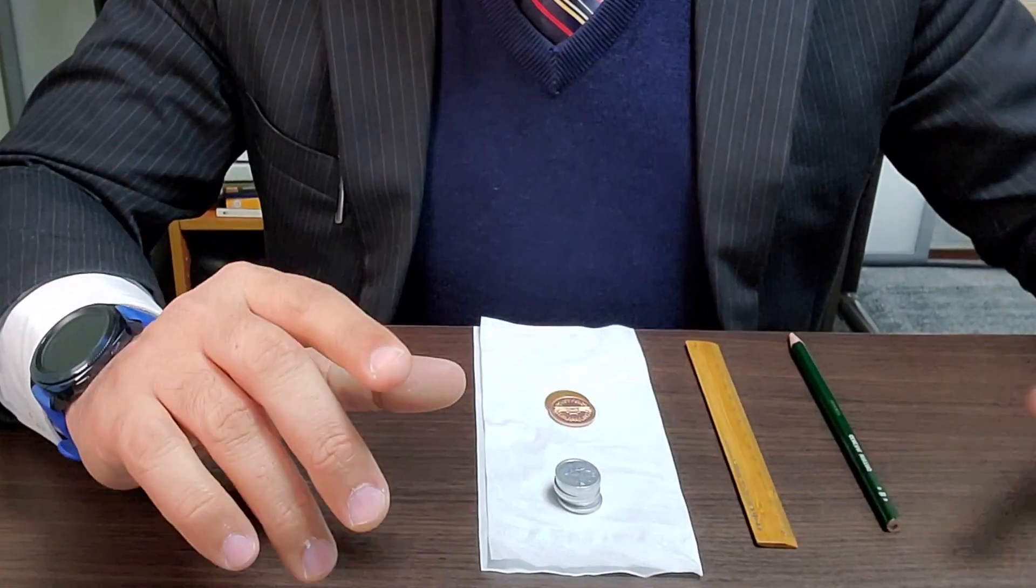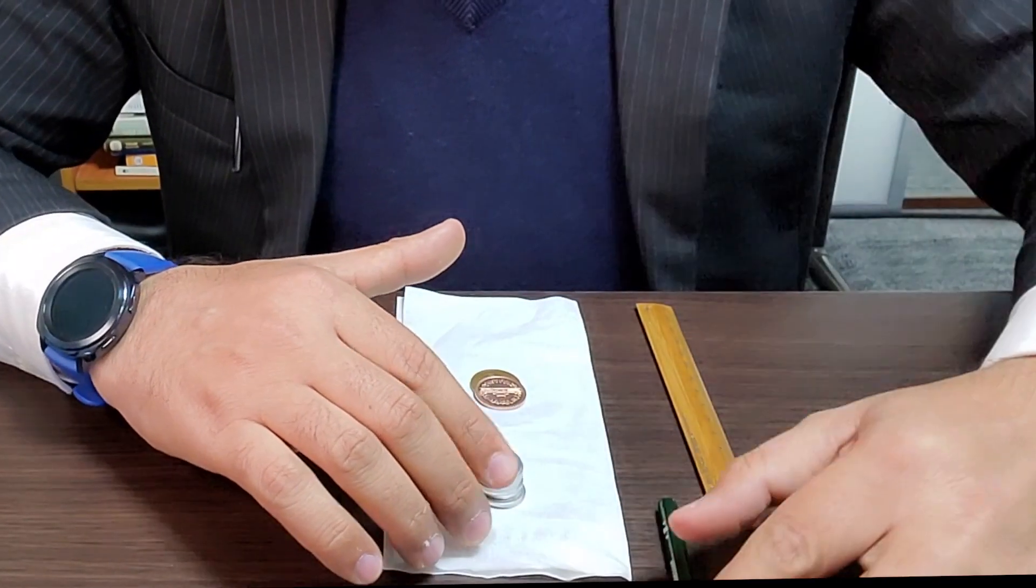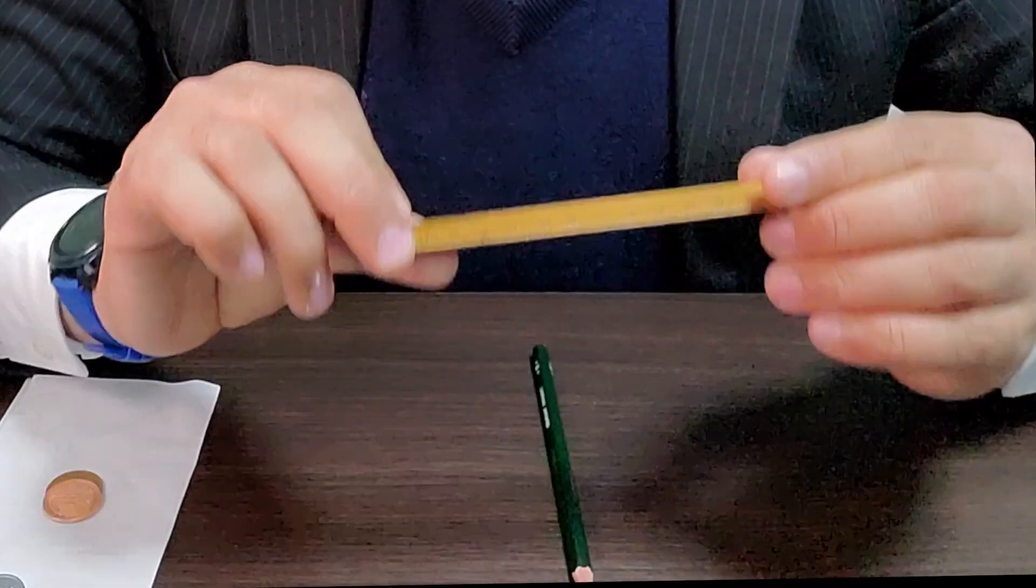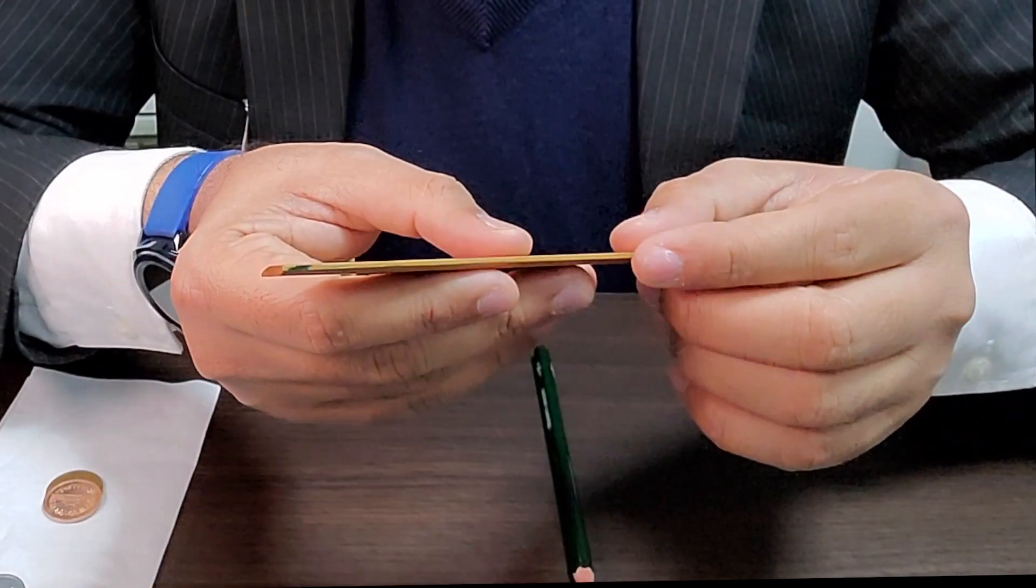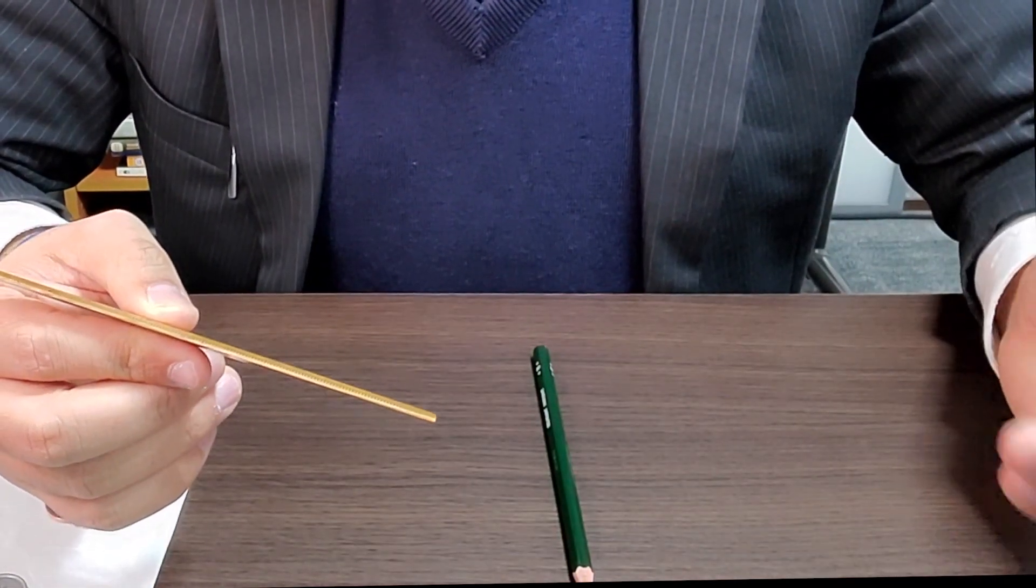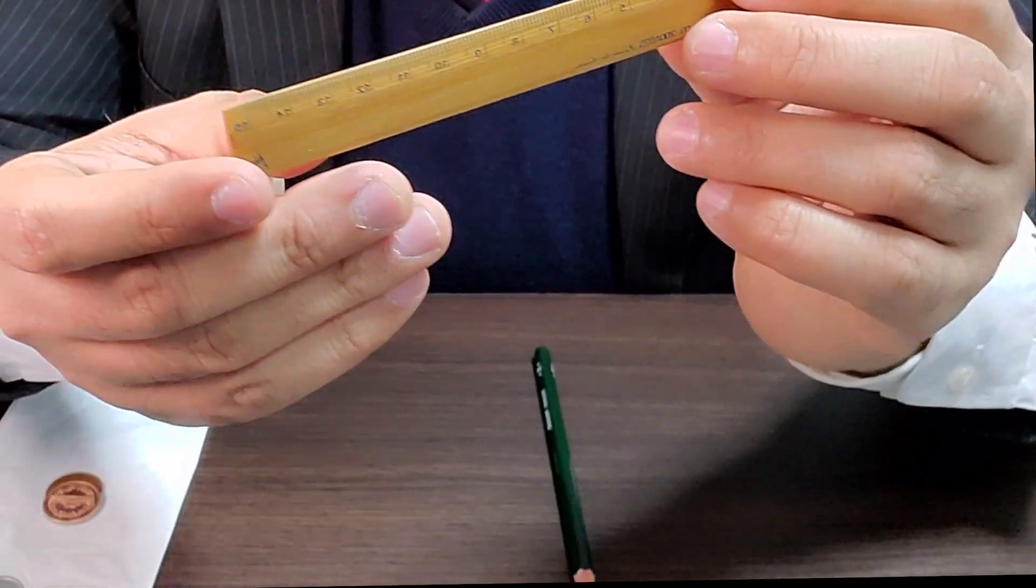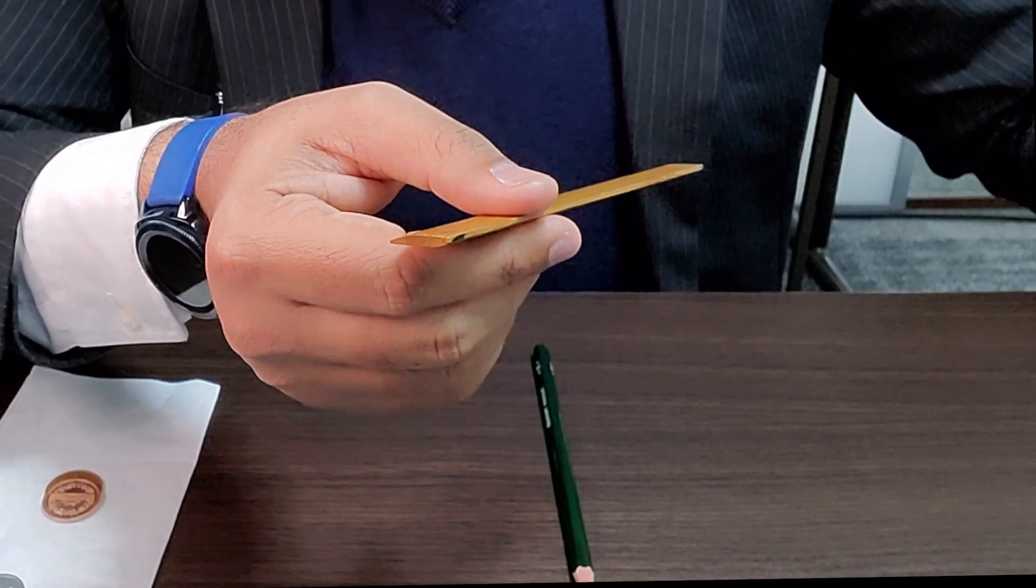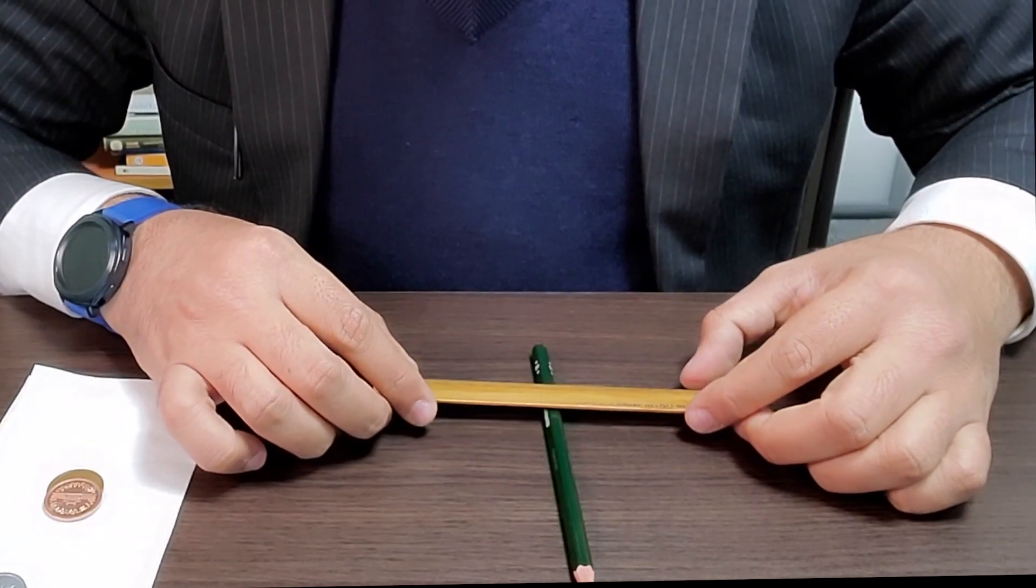First, we need a seesaw. So you can make a seesaw using the pencil as the base, like here, and the ruler as the seesaw. All you need is to find the midpoint on the ruler. So if you have a 12 inch ruler, then the 6 inch mark is the midpoint. If you have a 15 centimeter ruler, like I have here, then the midpoint is the 7.5 centimeter mark. So let's put it there, like so,